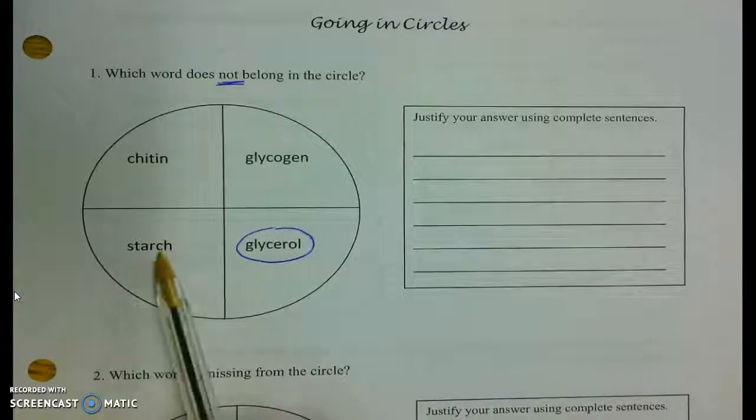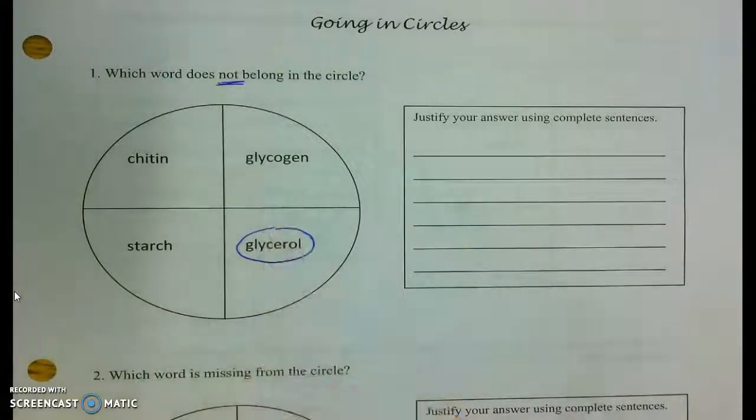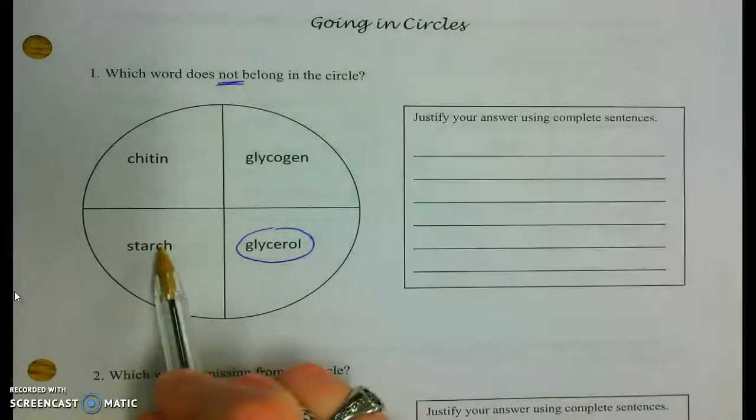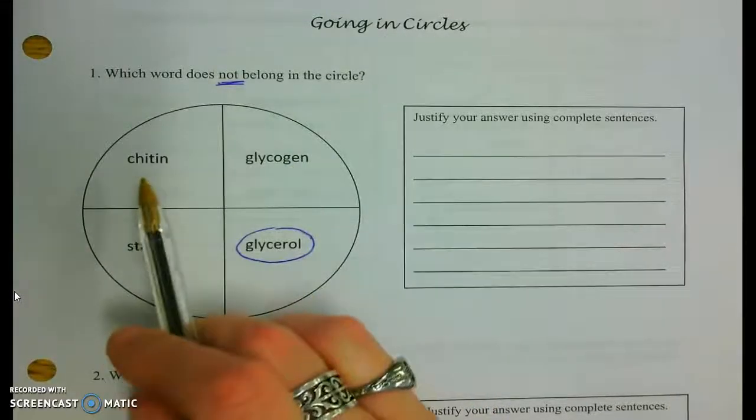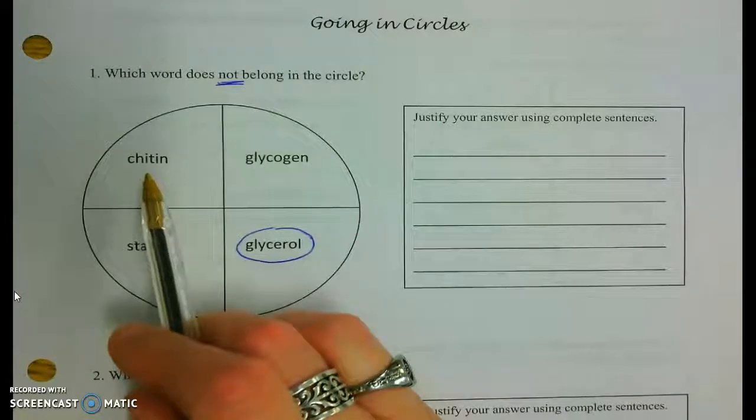Lipids is the backbone of that triglyceride. Whereas what do the other three terms all have in common? Good, they are carb words. We've got that energy in plants, the energy in animals, and the structural polysaccharide in animals.